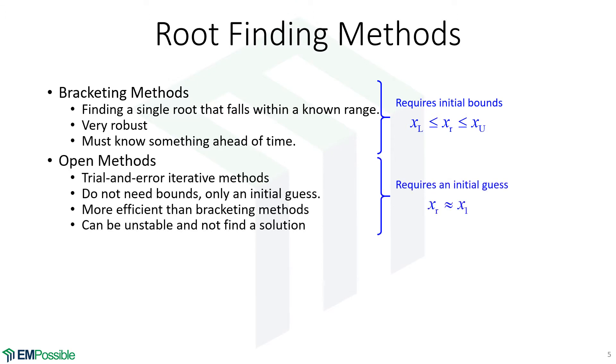The next type is an open method. Here, we have one initial guess at the root. Typically, we'll look at the slope of the function, guess where the next root is, and keep iterating that until we close it onto the root. The bracketing methods, we keep closing the bounds in onto the root.